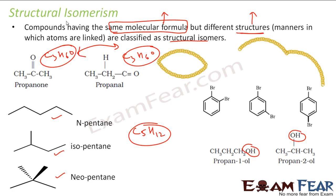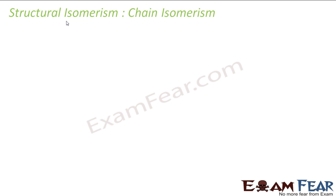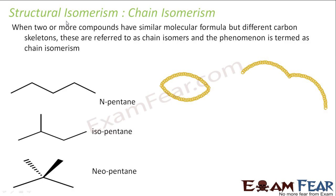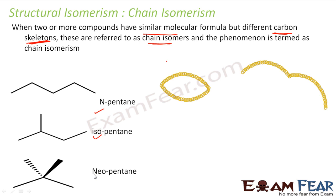Structural isomerism has different types. The first is chain isomerism, where two or more compounds have the same molecular formula but a different carbon skeleton. For example, n-pentane, isopentane, and neopentane all have the same molecular formula but different carbon structures. They are called chain isomers.